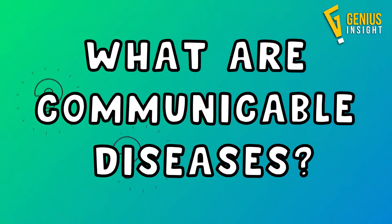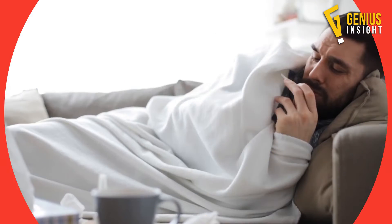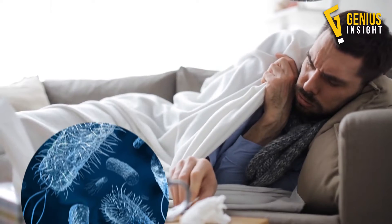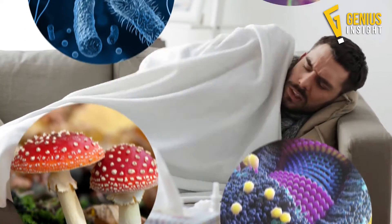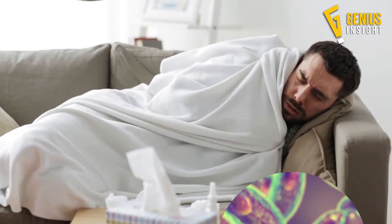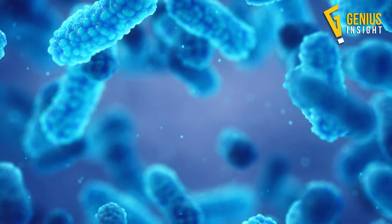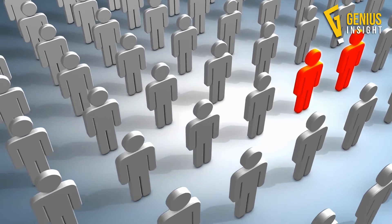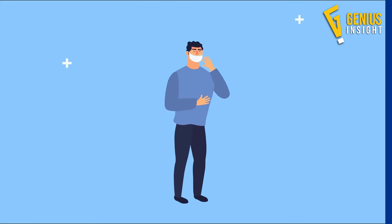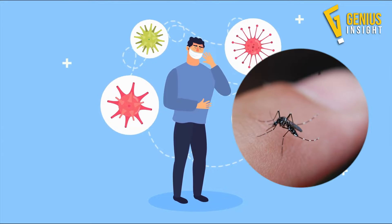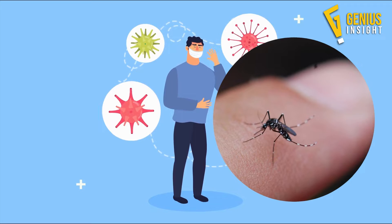What are communicable diseases? Communicable diseases can be caused by many pathogens, including bacteria, viruses, fungi, and parasites that may cause illness and disease. For humans, the transmission of pathogens may occur in a variety of ways: spread from person to person by direct contact, water or foodborne illness, or aerosolization of infected particles in the environment and through insects, mosquitoes, and ticks.